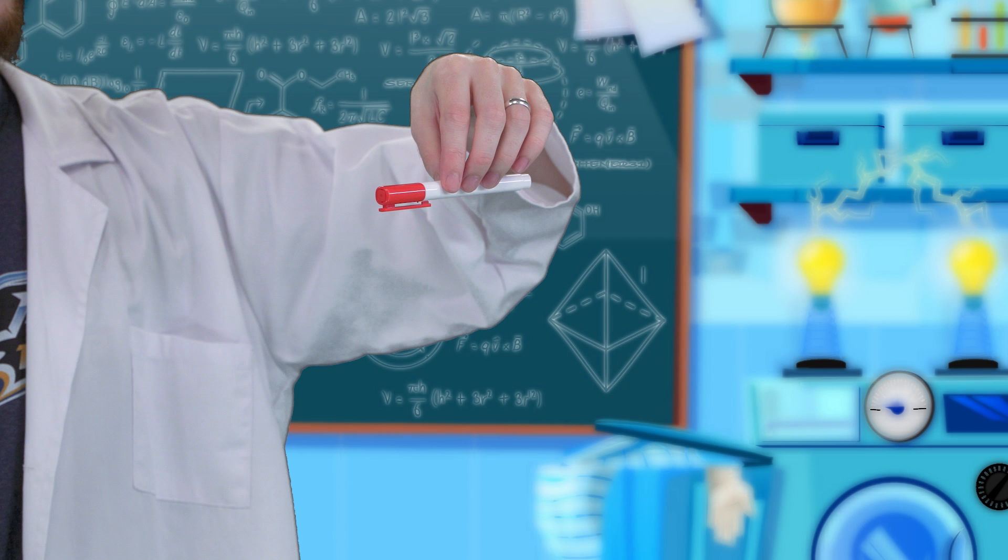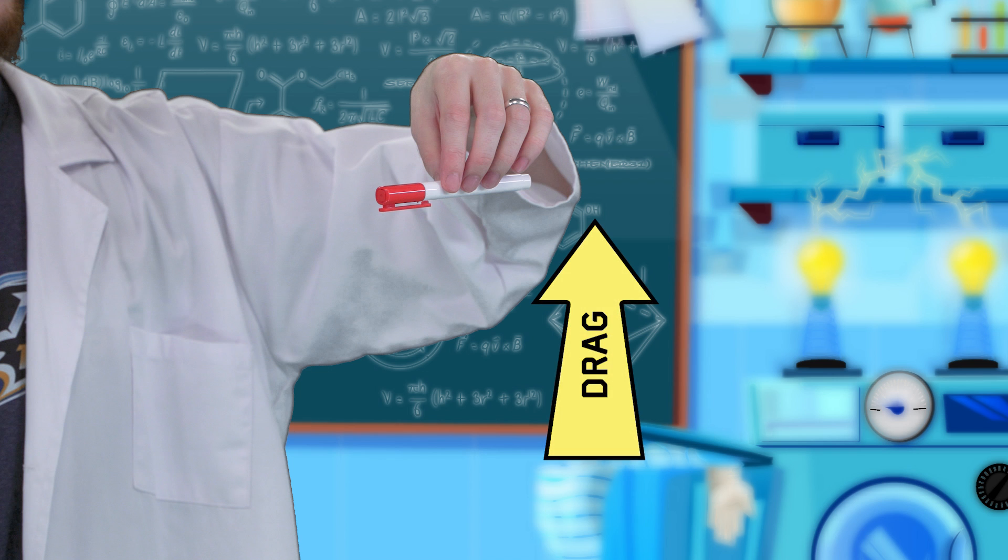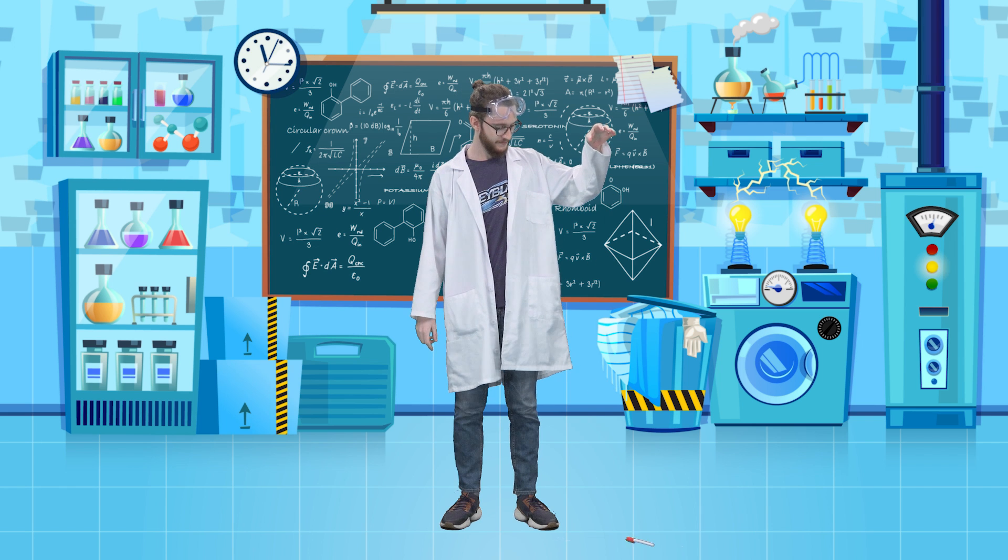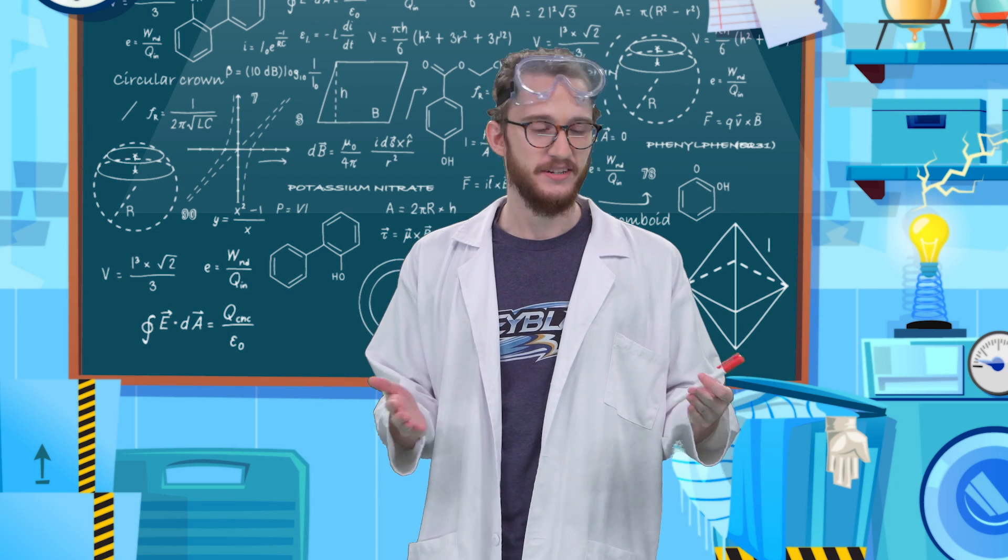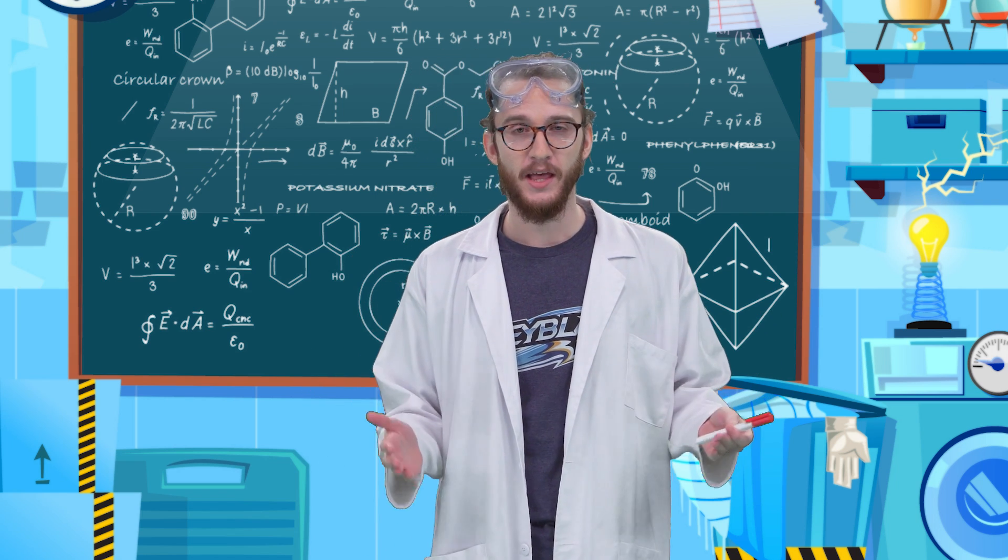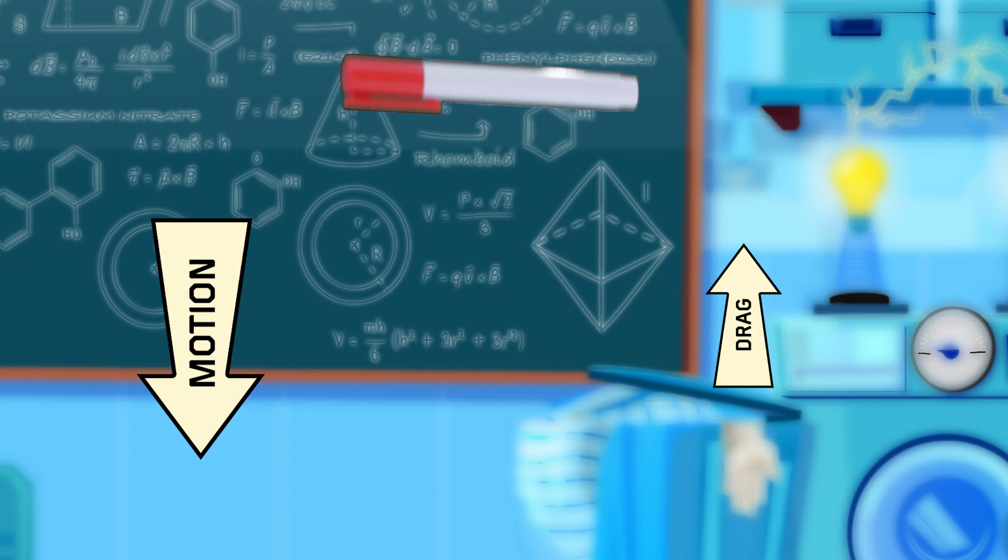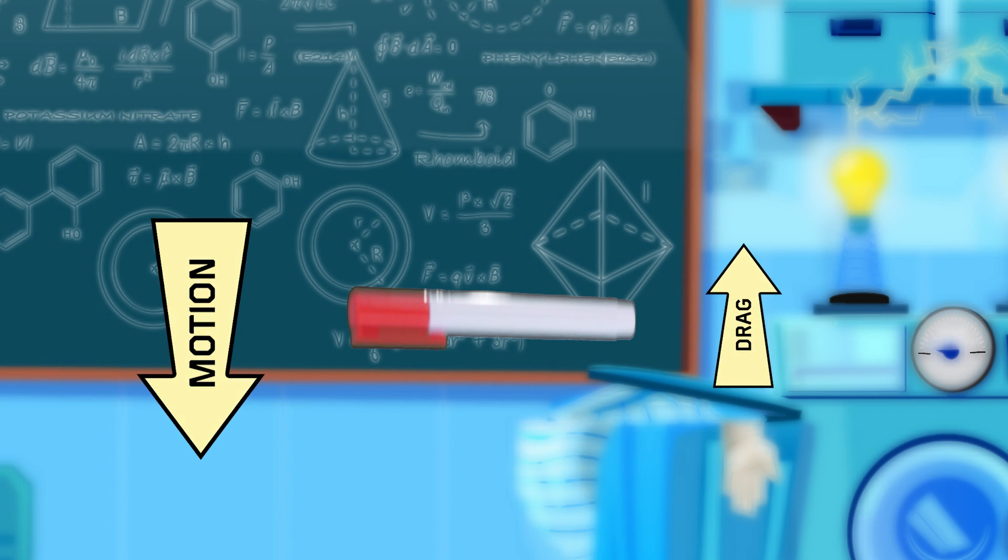When the pen drops, its motion is downward. Drag acts opposite the motion. So in this scenario, the drag will be acting upwards. This pen's not too large. It's got a surface area of about 5 inches squared. So when I drop it, it doesn't have to push through much air. It doesn't have much drag working against it, so it falls pretty quickly.